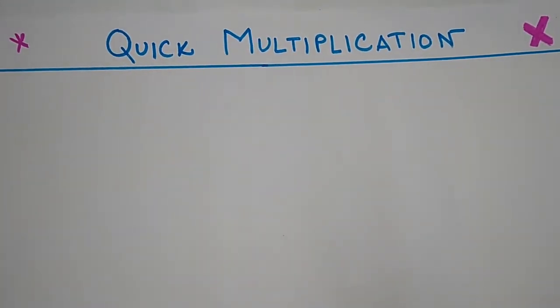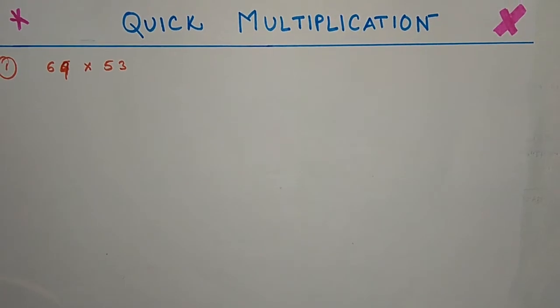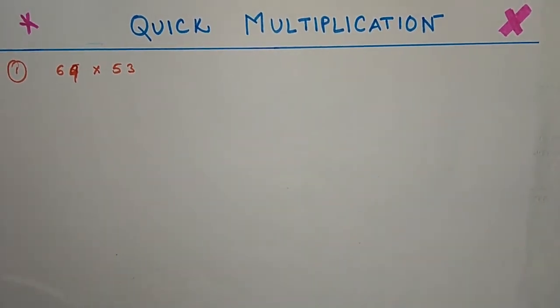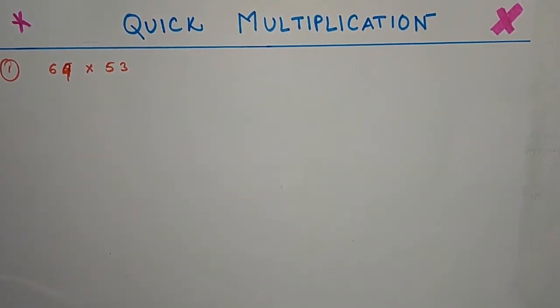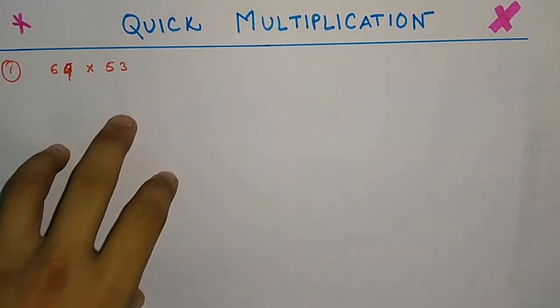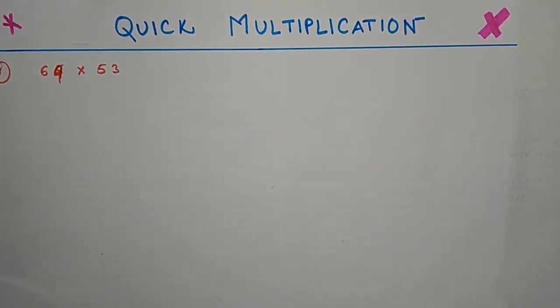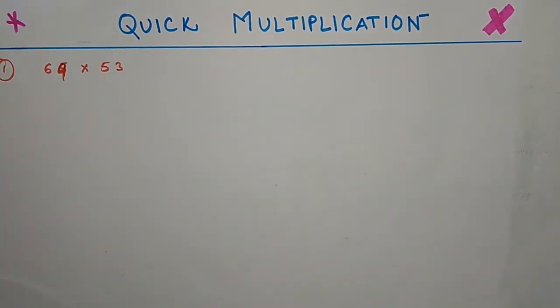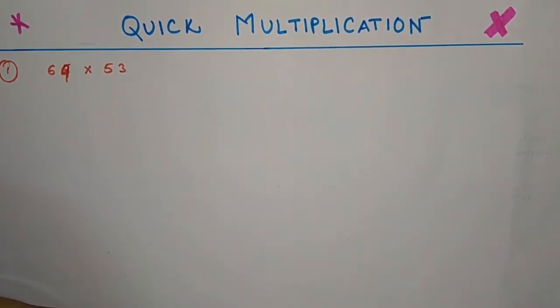Without further ado, let's get straight to it. Friends, in my last video I showed you some multiplication tricks which are solved using some basis. But if you have some numbers like these, 69 times 53, or some similar type of problems where you cannot use any basis, how are you going to solve these kind of multiplications?